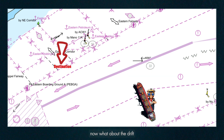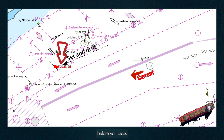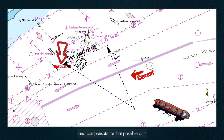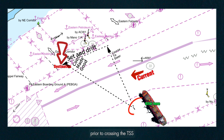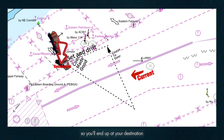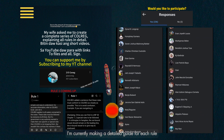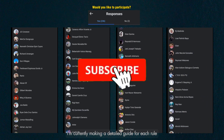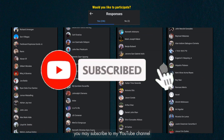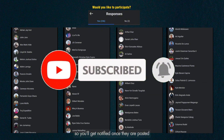Now, what about the drift? This is where your skill as a navigator comes in. Before you cross, take note of the current and its direction, and compensate for that possible drift prior to crossing the TSS, so you'll end up at your destination. I'm currently making a detailed guide for each rule. You may subscribe to my YouTube channel so you'll get notified once they are posted.